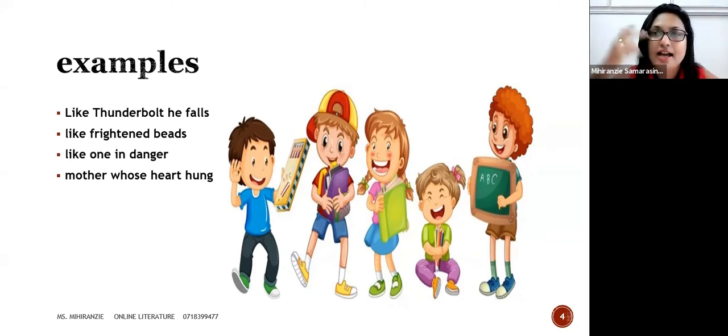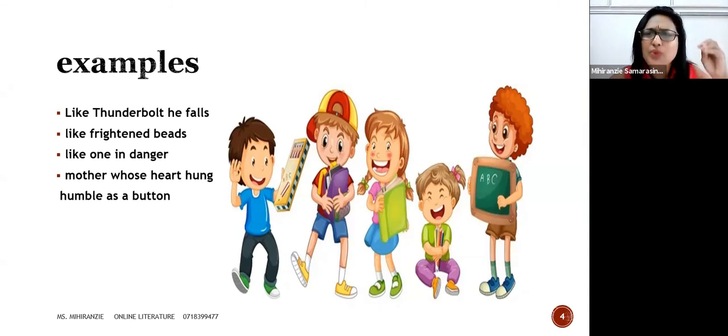And the same thing, 'like one in danger'—yes, very good, you've all identified the poem already. 'Like one in danger' is again a reference to the same bird. The bird got scared and as if he was in danger, he wanted to fly out. 'A mother whose heart hung humble as a button'—this mother in another poem has a very sad situation because the son has died, and therefore the heart of the mother is like reduced to a small teeny weeny button. Very good! Now I know you've all identified the poems.